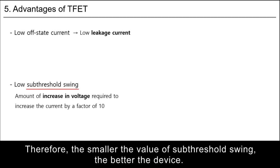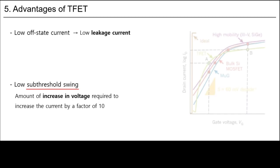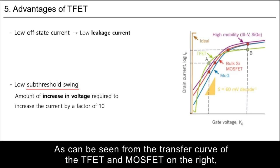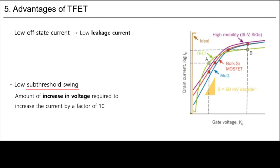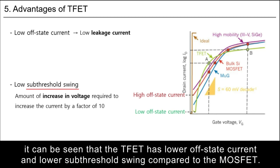Therefore, the smaller value of subthreshold swing, the better the device. As can be seen from the transfer curve of the TFET and MOSFET on the right, the TFET has lower off-state current and lower subthreshold swing compared to the MOSFET.